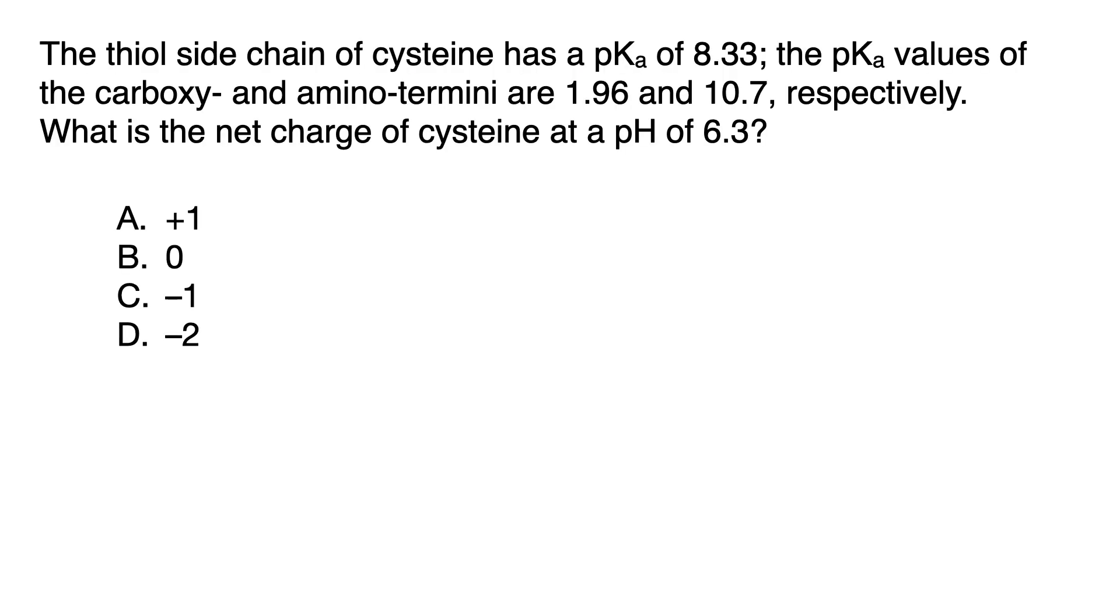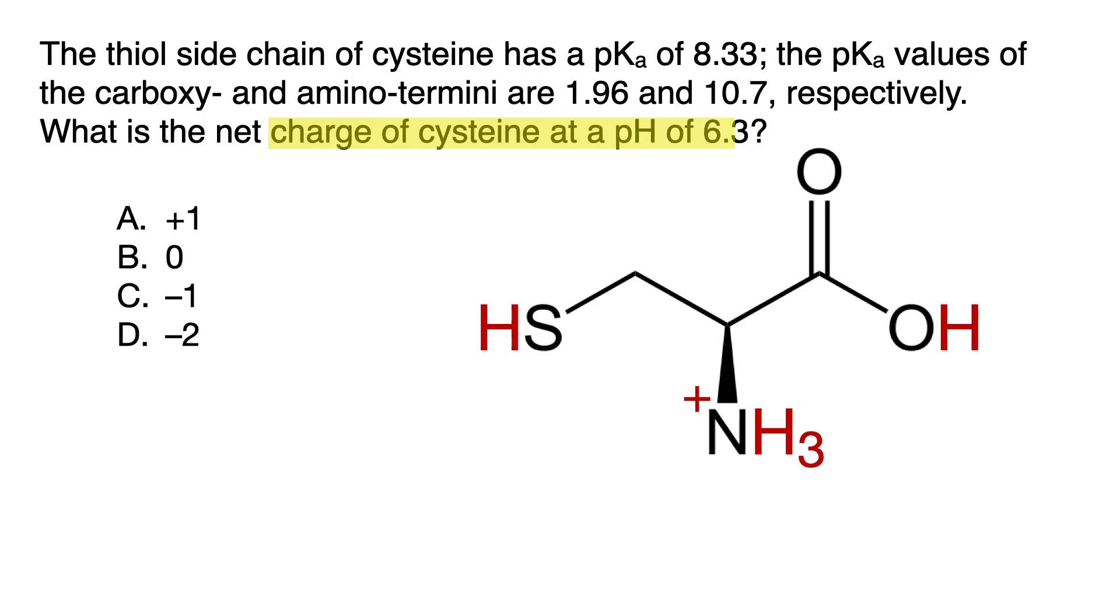Whether or not the question stem shows an image of the fully protonated amino acid, it's good to know what parts are protonated on all amino acids as well as their pKa's. But I'll show fully protonated cysteine for this question. So if they're asking for the net charge of cysteine at pH of 6.3,